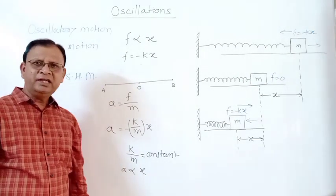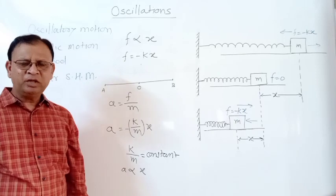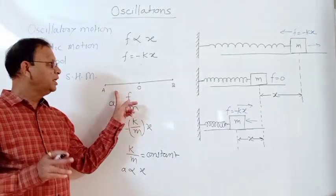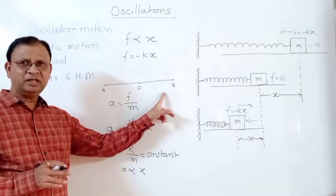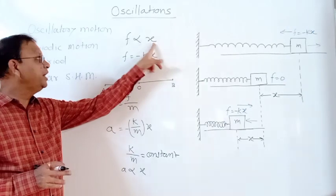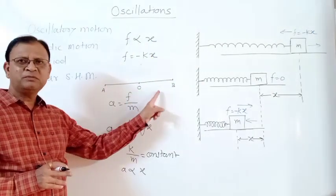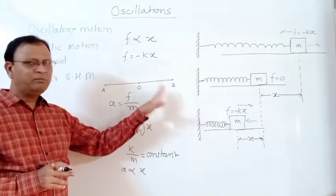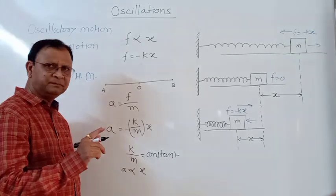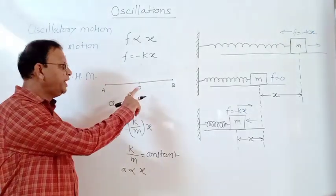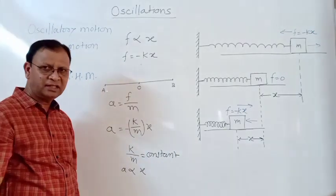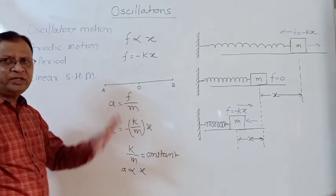Linear simple harmonic motion is defined as a linear oscillatory motion of a body in which the force or acceleration is directly proportional to its displacement from the mean position, and the force and displacement are in opposite directions. This is the definition of linear SHM, which may be asked as a two-mark or four-mark question.